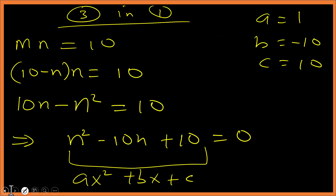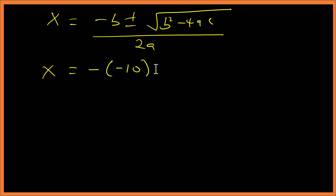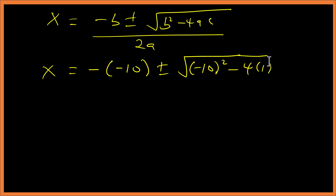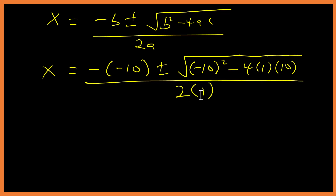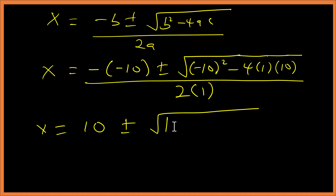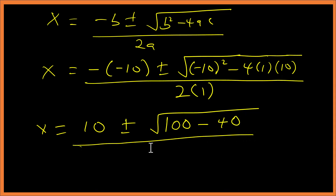Using the quadratic formula, with b equals negative 10, we compute b squared minus 4ac: that is (negative 10) squared minus 4 times 1 times 10, which gives 100 minus 40, equals 60. So n equals 10 plus or minus square root of 60, all over 2 times 1, which is 2.